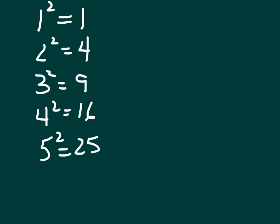What that means is that if there are perfect squares, then in between those there are numbers that are not perfect squares. For example, the square root of 2 is not a perfect square because there is not a number that you can multiply by itself and get it to end in 2. It's not possible.